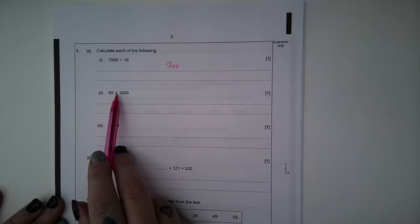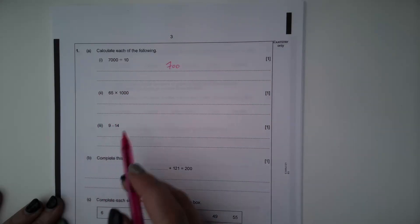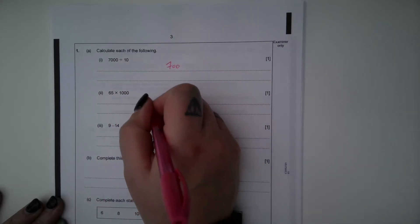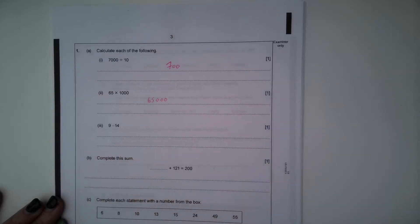Part 2, 65 times 1000. So if I'm multiplying by powers of 10, the digits move to the left, the appropriate number of places. So this is going to become 65,000.